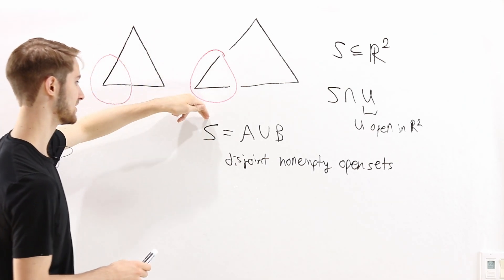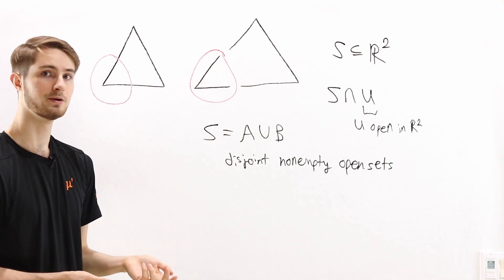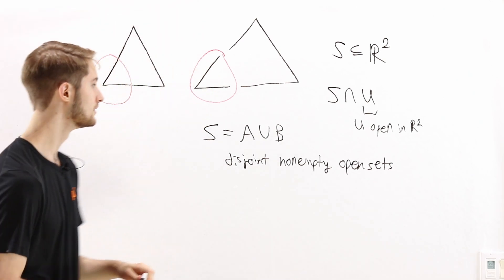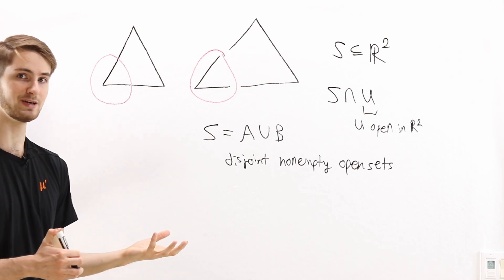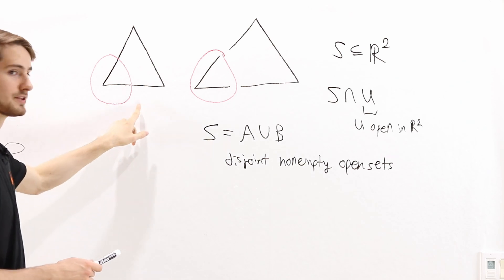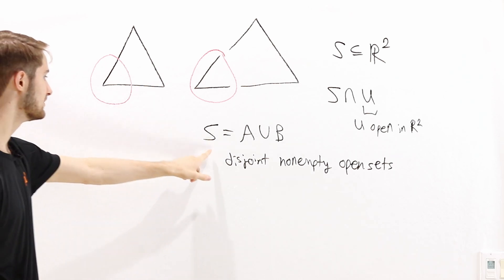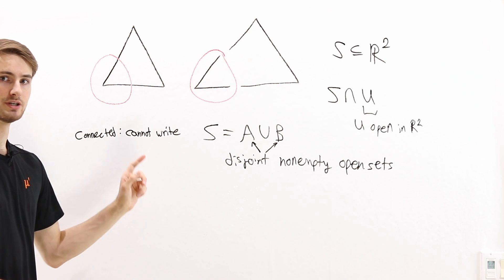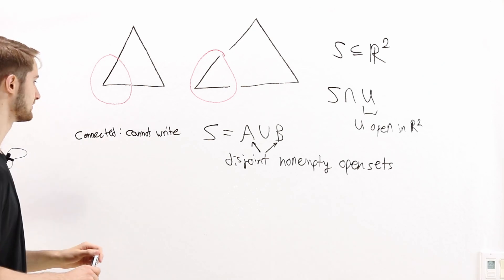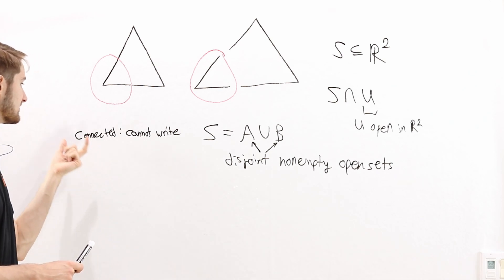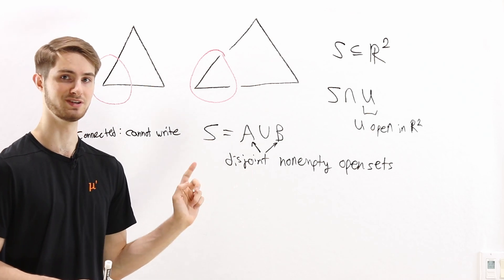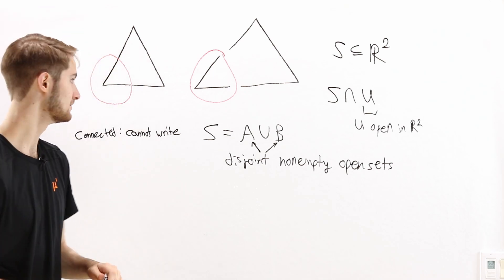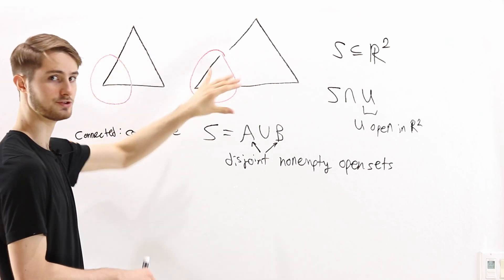We can always write a topological space as the union of two sets, but we can't always write it as the union of disjoint non-empty open sets. So a topological space is connected if it cannot be written as the union of two disjoint non-empty open sets. This is the definition of connectedness for an arbitrary topological space.